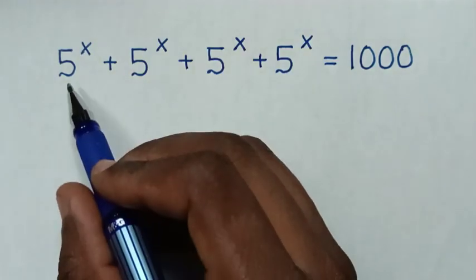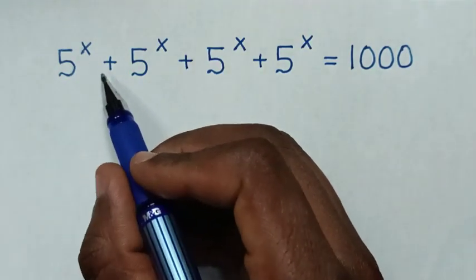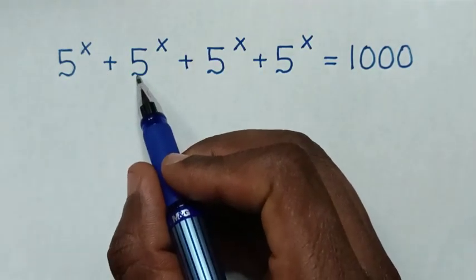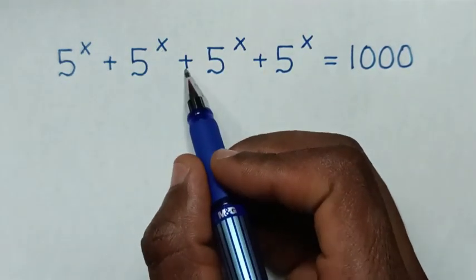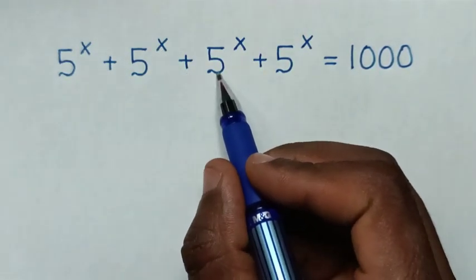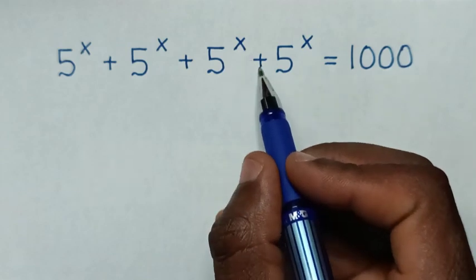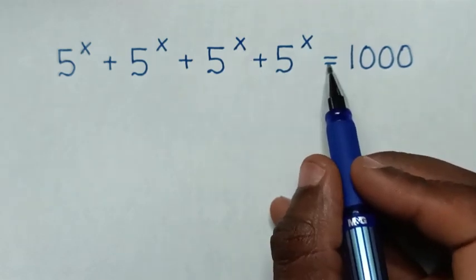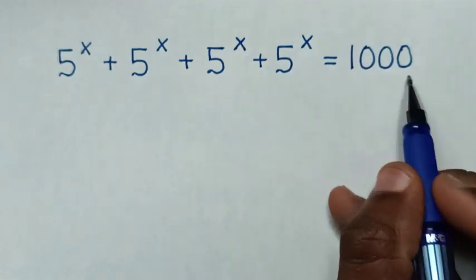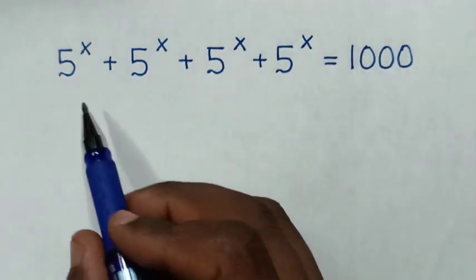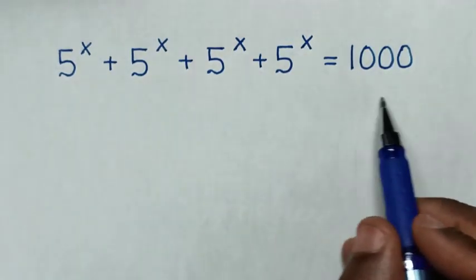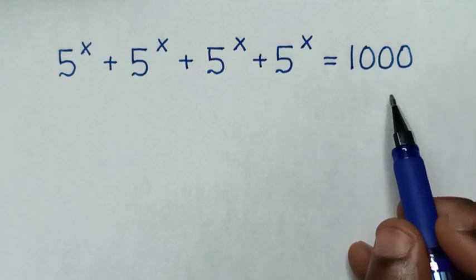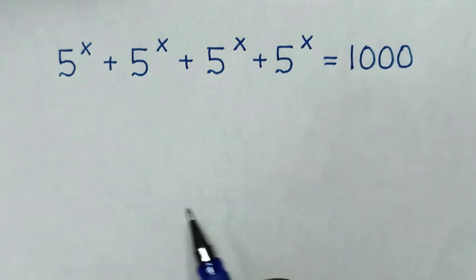Hello. How to solve 5 power x plus 5 power x plus 5 power x plus 5 power x is equal to 1000, to find the value of x from this equation.